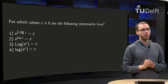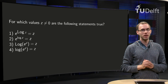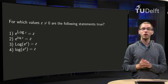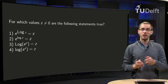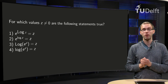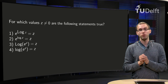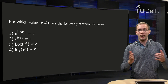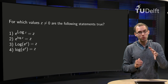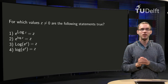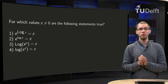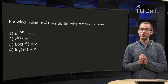Here we have our four statements: e to the power Log z equals z for both capital Log and small log, and the log of e to the power z equals z for both small log and capital Log. Which one of those four still holds? You cannot decide by just looking at them — you really need to use the definition to check this, because it is non-trivial. Let's start with the first one.